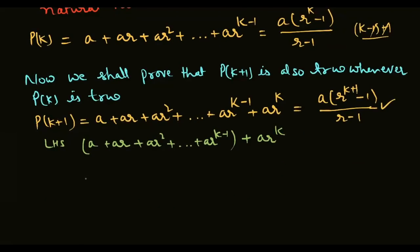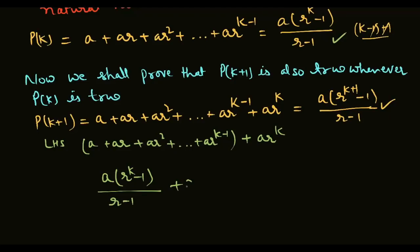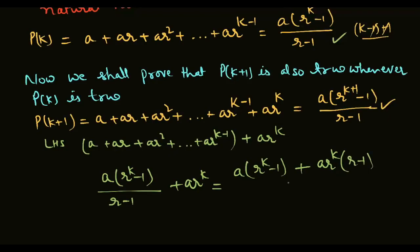Pk की term क्या है? वही — a + ar + ar² + ... + arᵏ⁻¹ = a(rᵏ - 1)/(r - 1)। तो Pk करते हैं: a(rᵏ - 1)/(r - 1) + arᵏ। इसको LCM से solve करेंगे: [a(rᵏ - 1) + arᵏ(r - 1)] / (r - 1)।